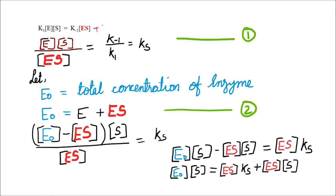One more factor is added here: k2 into [ES]. In the Michaelis-Menten equation this term was not considered, so the equation simplified to Ks. But on adding k2, when we take [ES] as common it becomes k-1 plus k2. So the Ks considered in the Michaelis-Menten equation changes to Km in Briggs-Haldane's equation. I am deriving it taking the base of the Michaelis-Menten equation so it will not be difficult to understand.